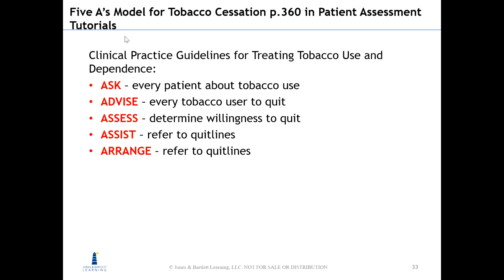There is a 5 A's model for tobacco cessation, found on page 360 in the Garrick textbook. The 5 A's model involves five steps: Ask, Advise, Assess, Assist, and Arrange.